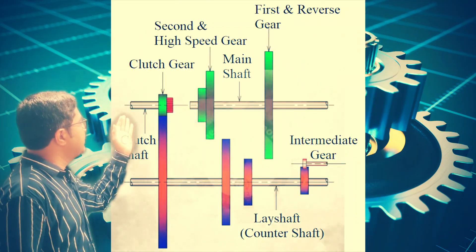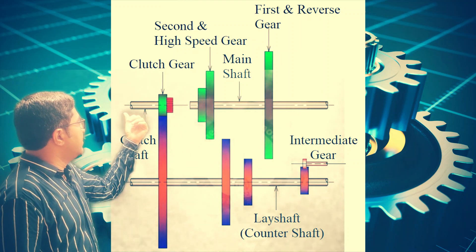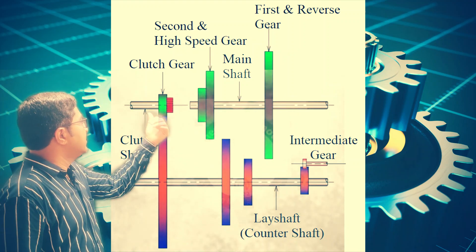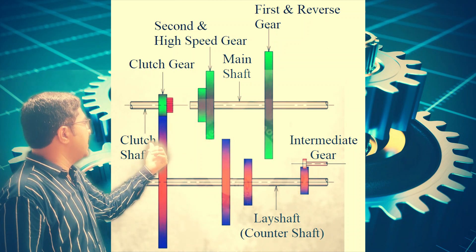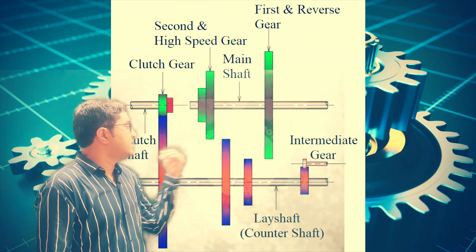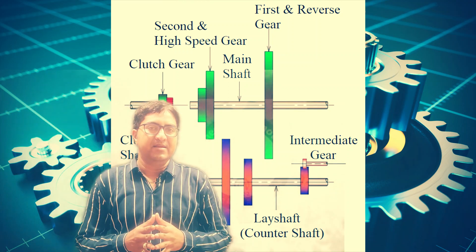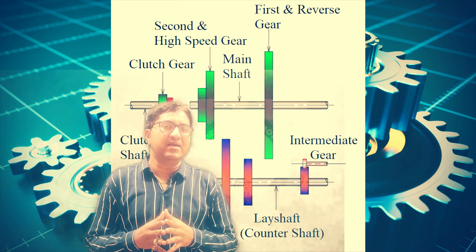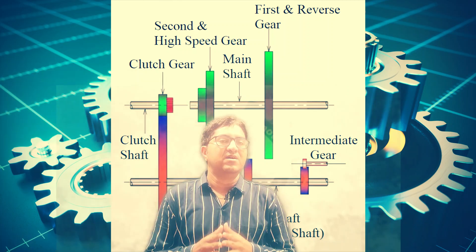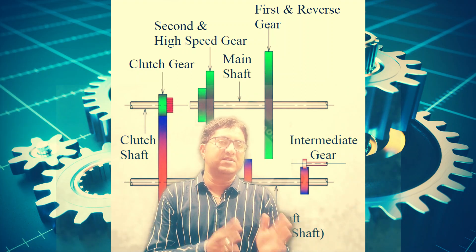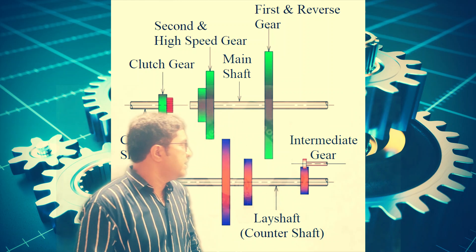So first of all power comes from the engine to the clutch shaft, then it will transfer to the clutch gear. This clutch gear is always meshed with the gears on the layshaft. And by selecting the gears on the main shaft by using selector mechanism, we can shift the gear: first, second, third, and reverse.